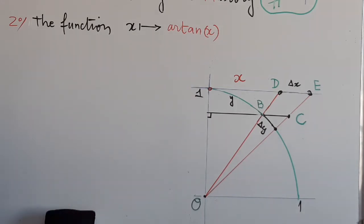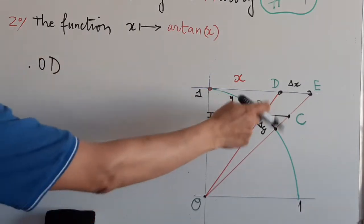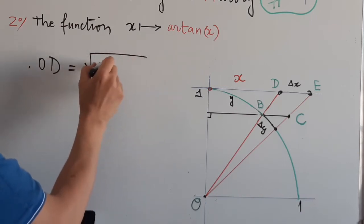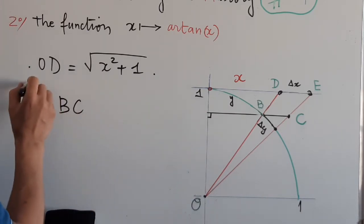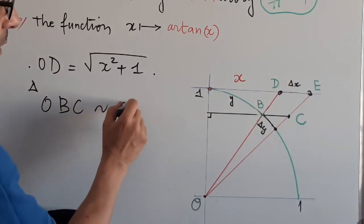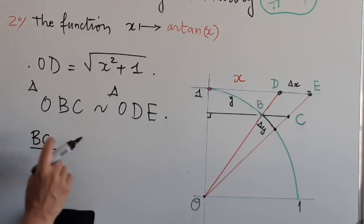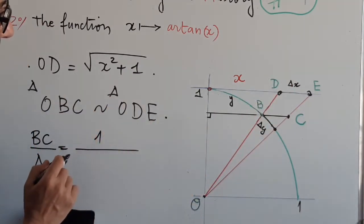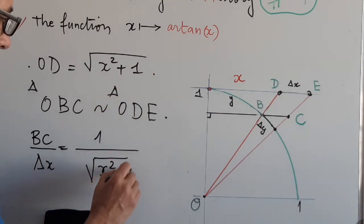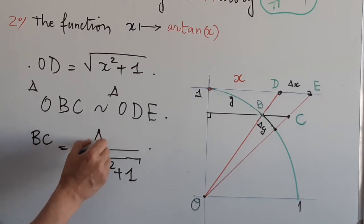Using geometry in a clever way leads Newton to discover analysis. In this situation, we have by Pythagoras' theorem that OD, this length, equals the square root of x² + 1. Using the fact that the two triangles OBC and ODE are similar, one finds that dc over delta_x equals 1 over the square root of x² + 1.